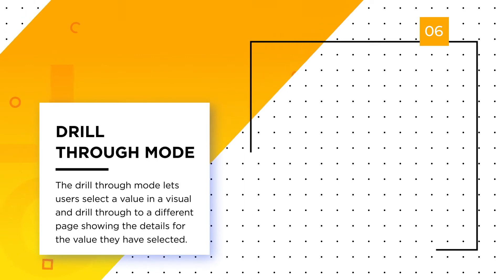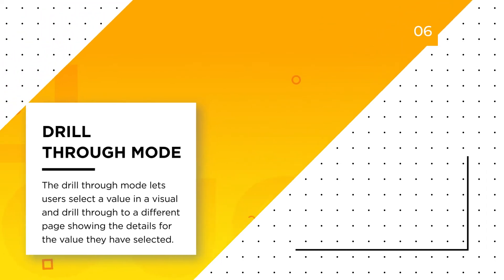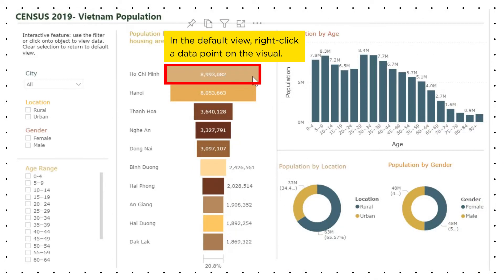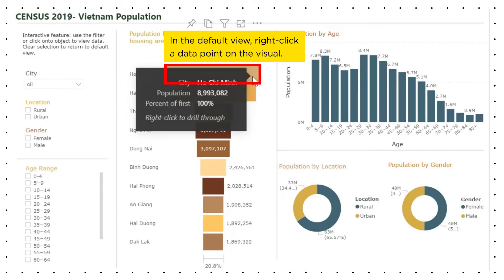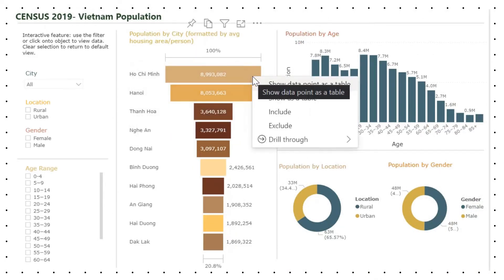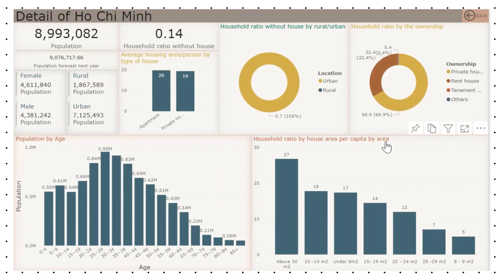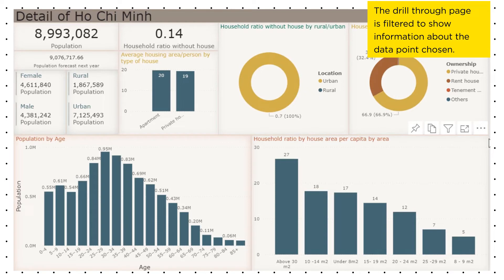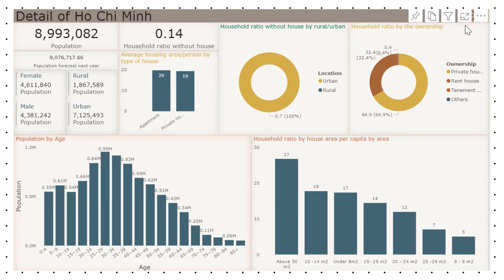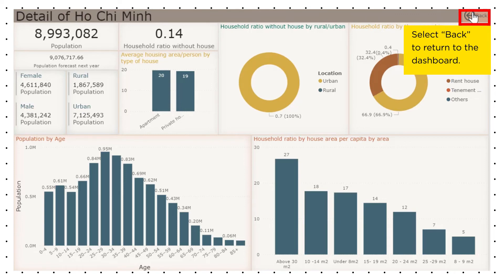Drill Through Mode. In the default view, right-click a data point on the visual. Select Drill Through, then Detail. The Drill Through page is filtered to show information about the data point chosen. Select Back to return to the dashboard.